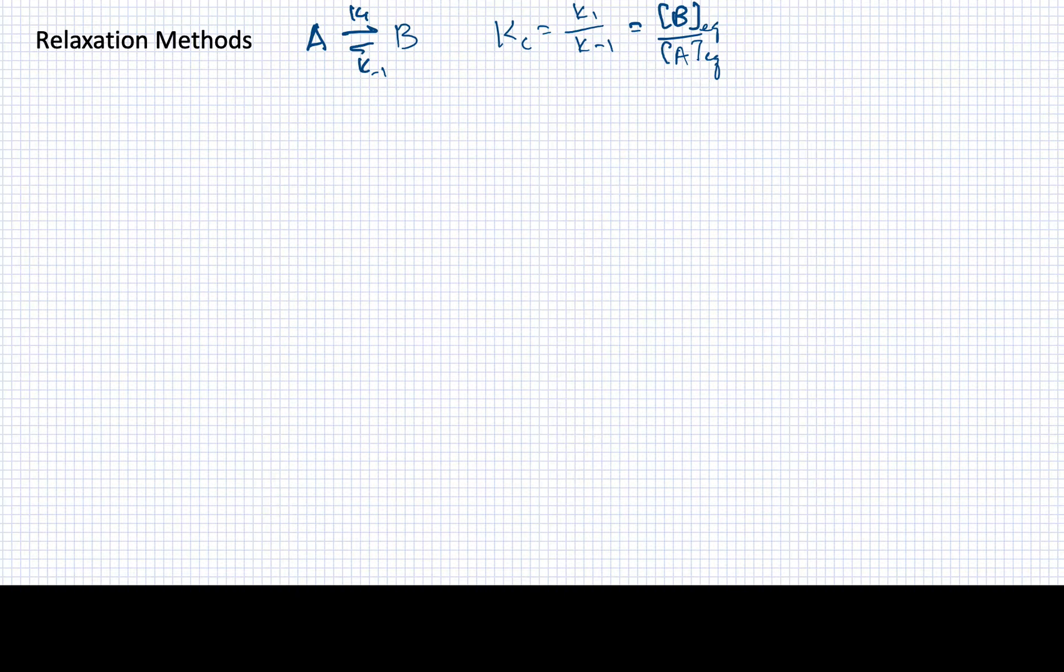Let's now consider a reversible reaction that reaches equilibrium very quickly. Our reaction of interest is the simple reaction of A going to B with forward rate constant K1 and reverse rate constant K minus 1. The equilibrium constant for this process would simply be given by the ratio of those two rate constants, and you can also write it in terms of the concentrations of the reactants B divided by A.